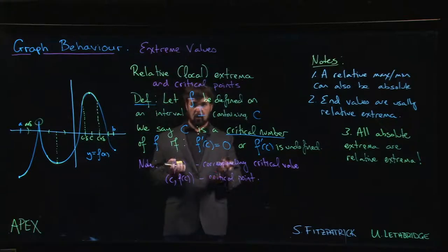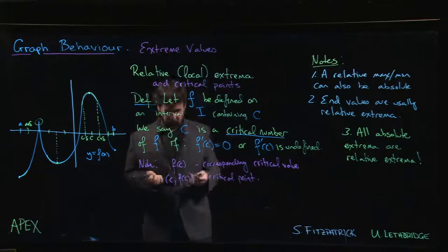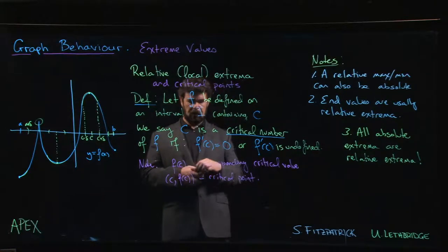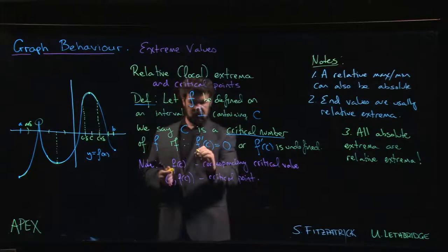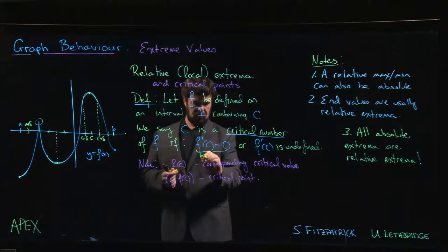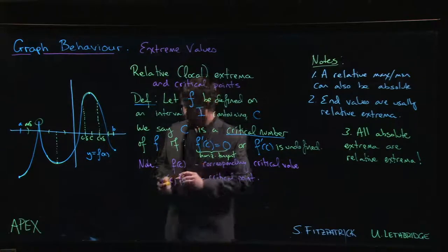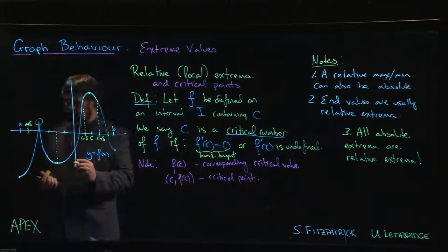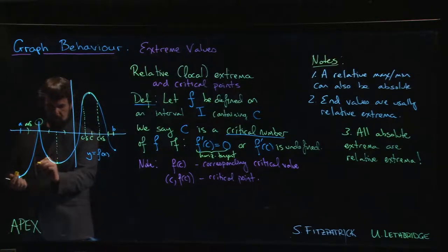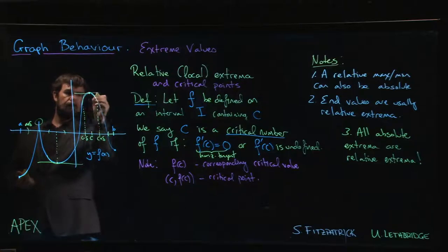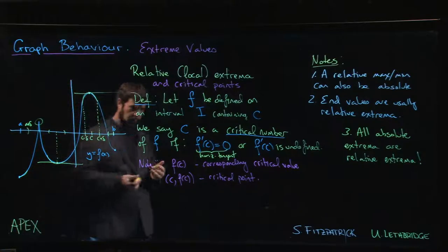What do critical points do for you? Remember what goes on at these critical points. What does it mean to say that f prime of C equals zero? This means you have a horizontal tangent. For example, looking at this picture, there's a horizontal tangent here and another one there.